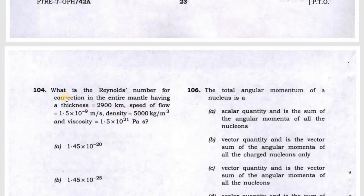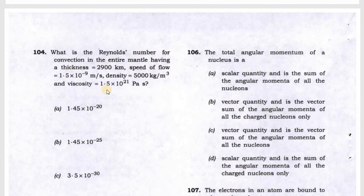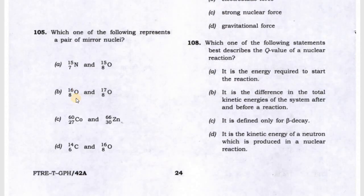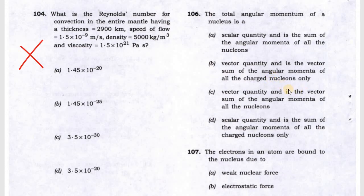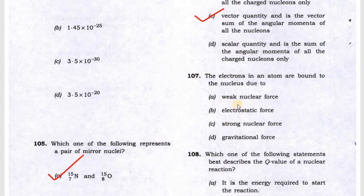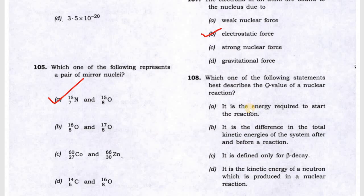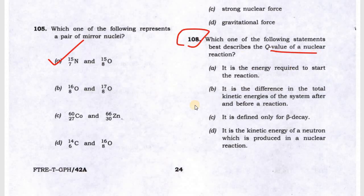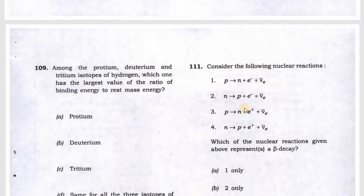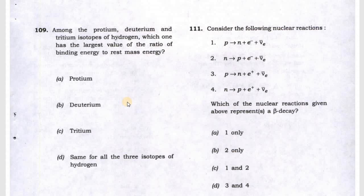Question 104 will be discussed later. Question 105 is about mirror nucleus, answer is A. Question 106 is angular momentum of the nucleus, answer is C. Electrons in the atom are bound by electrostatic force. Question 108 asks about Q value of a nuclear reaction. Q value is the difference in total kinetic energy of the system after and before. Next, among proton, deuterium and tritium isotopes of hydrogen, who has the largest ratio of binding energy? Binding energy is maximum when more neutrons are present. Proton has zero neutrons, deuterium has one neutron, tritium has two. The neutron and proton binding energy is strongest, so tritium will be the maximum.